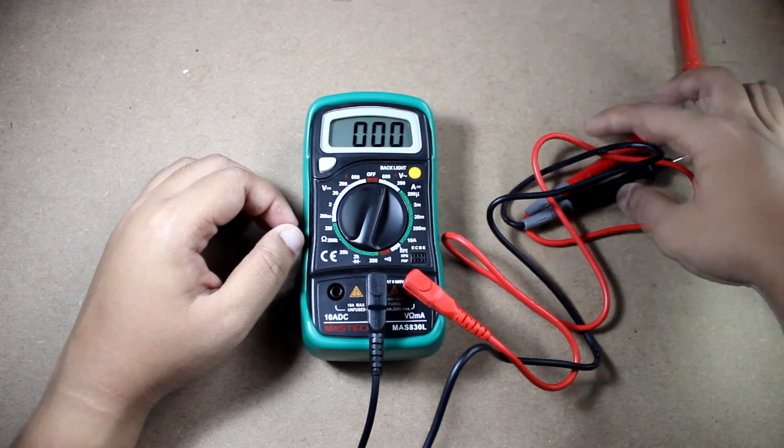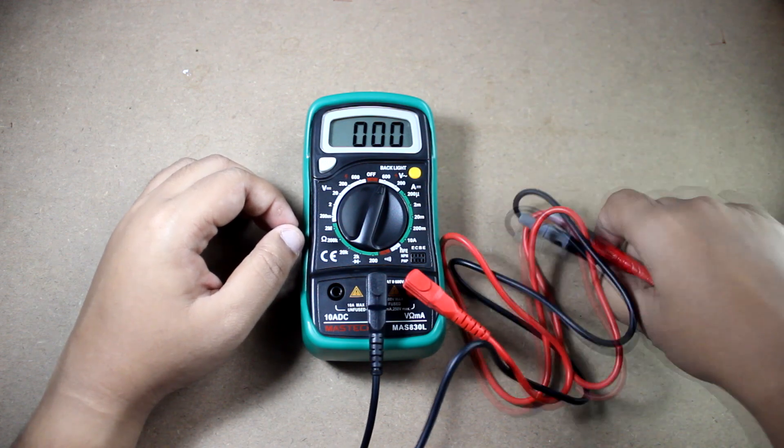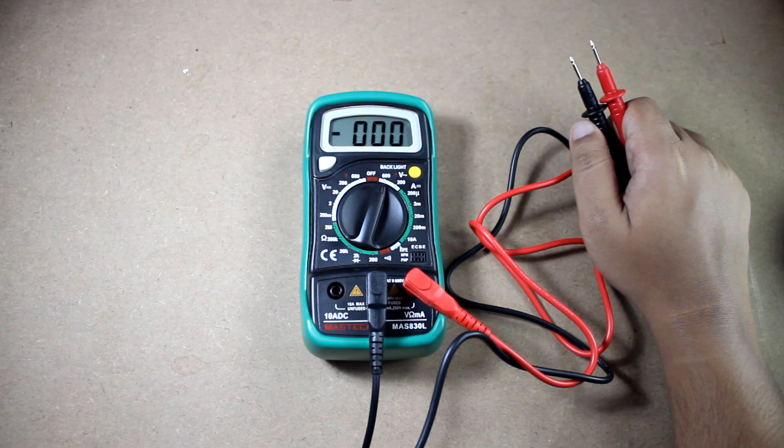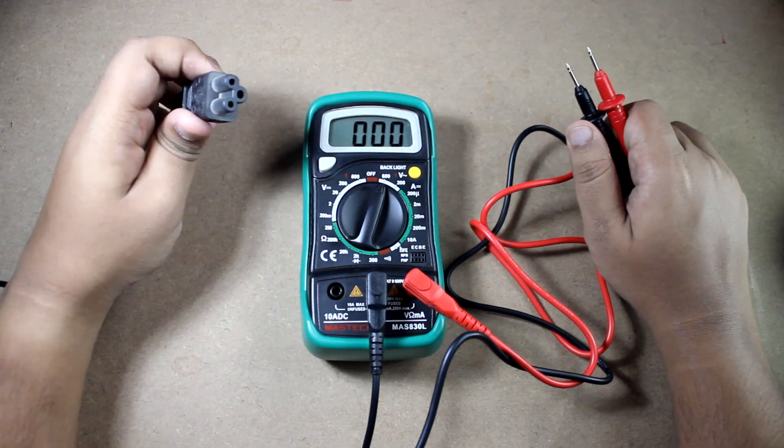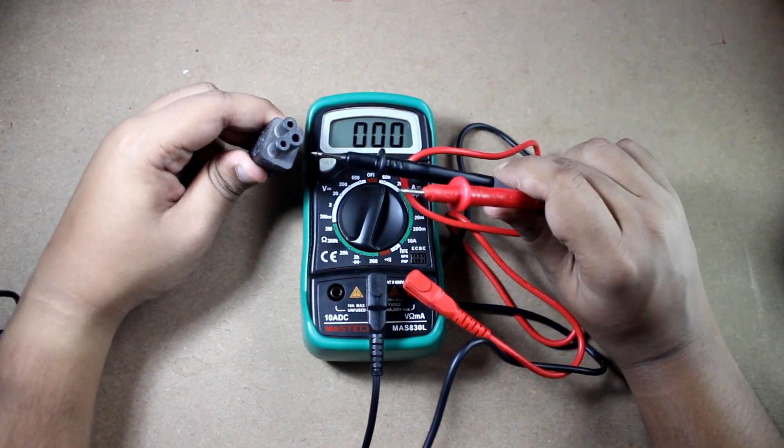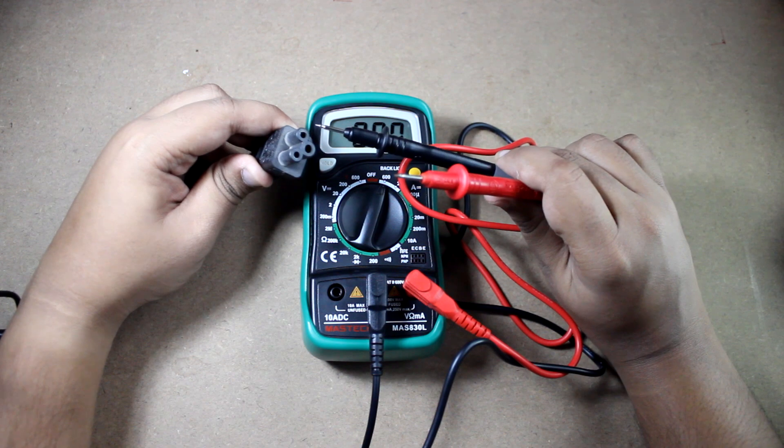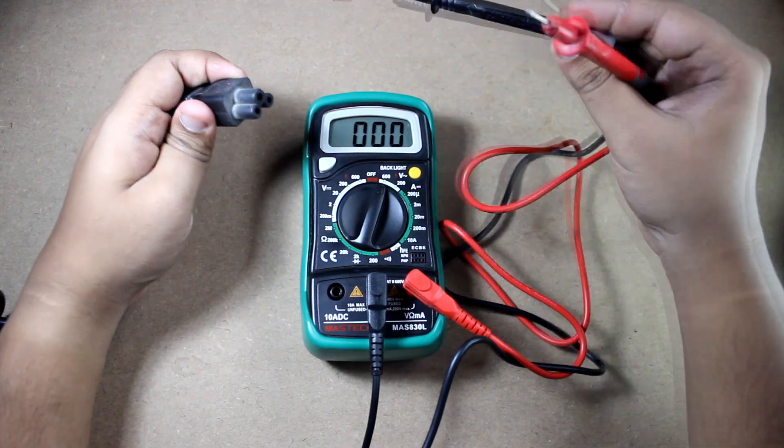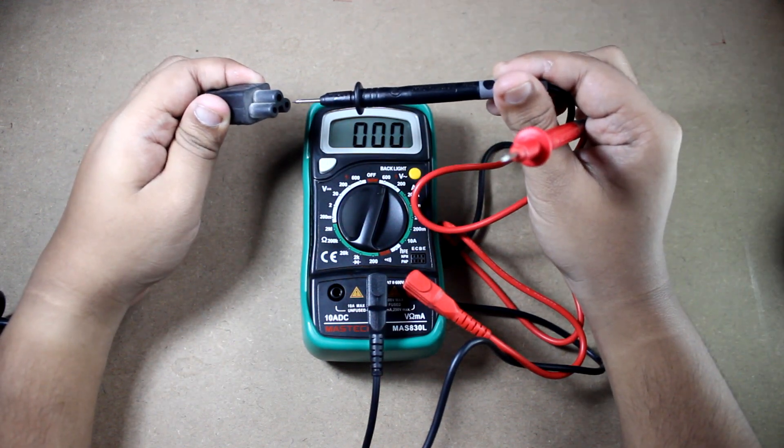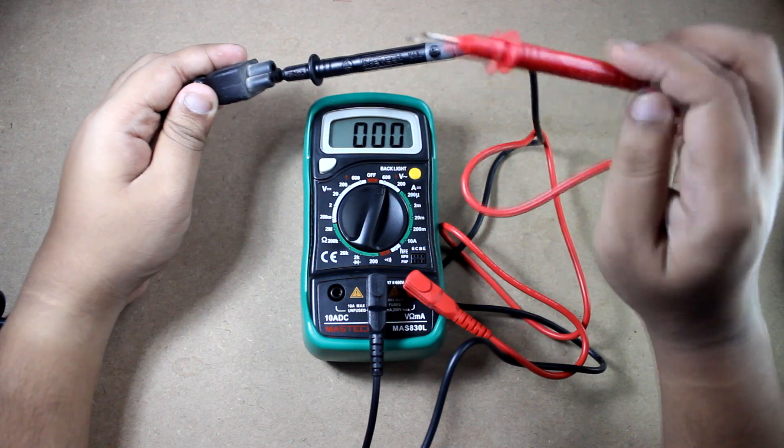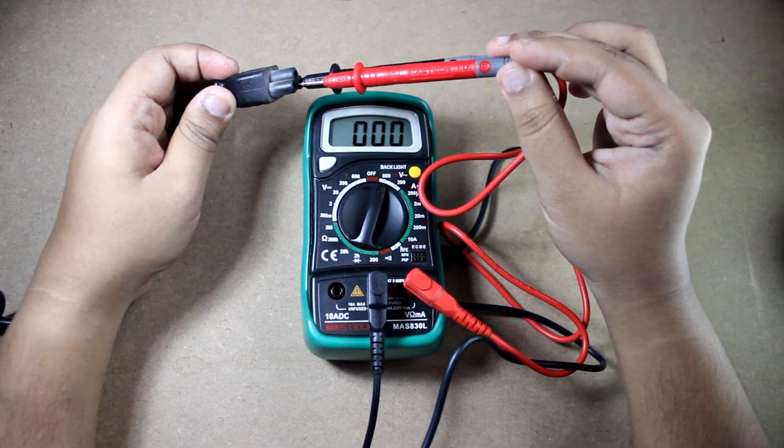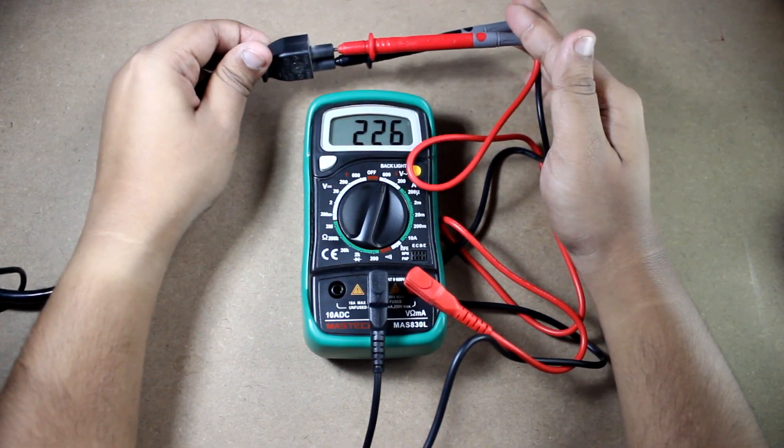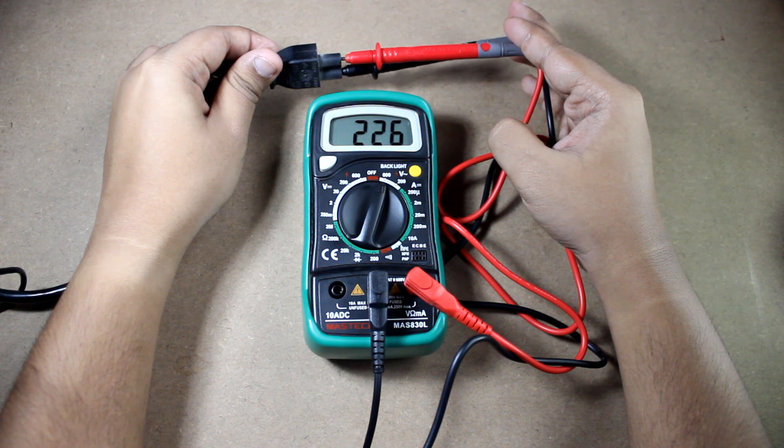The next part is connect the probe tips to the AC mains. This is the ground part, this is the live. As for AC the polarity doesn't matter. I will put this black probe here and put this red probe here. Don't touch the tips. It is giving a reading of 226 volt AC.